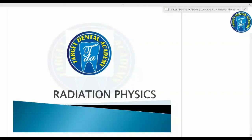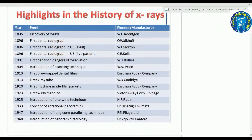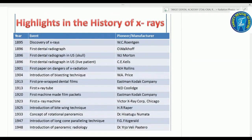Good morning guys. Today we are going to discuss our first chapter of oral radiology, that is radiation physics. Starting with the highlights in the history of X-rays: very important is who discovered the X-ray. W.C. Roentgen discovered the X-ray in the year 1895.